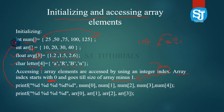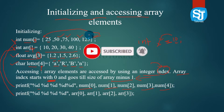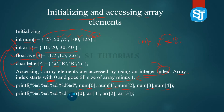The array index starts at 0. For example, arr[0] is the first element, arr[1] is the next. arr[2] is 30, and arr[3] is 40.